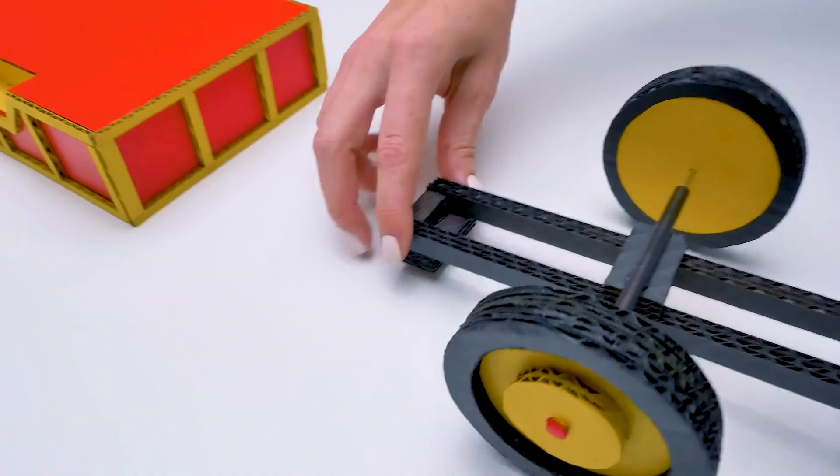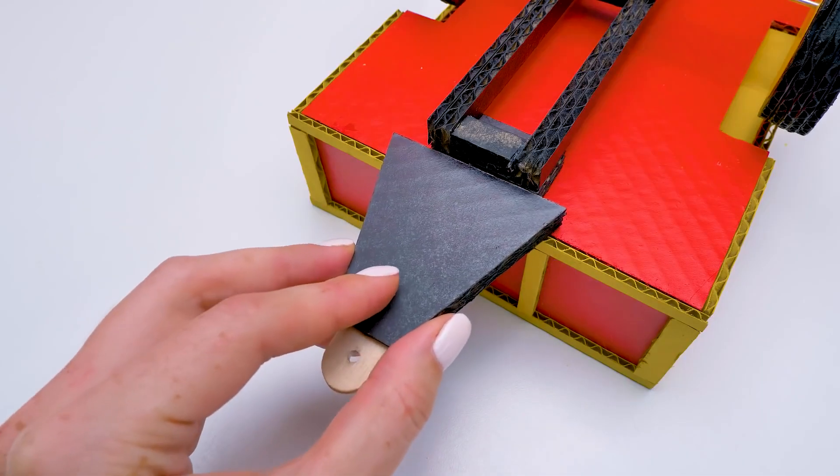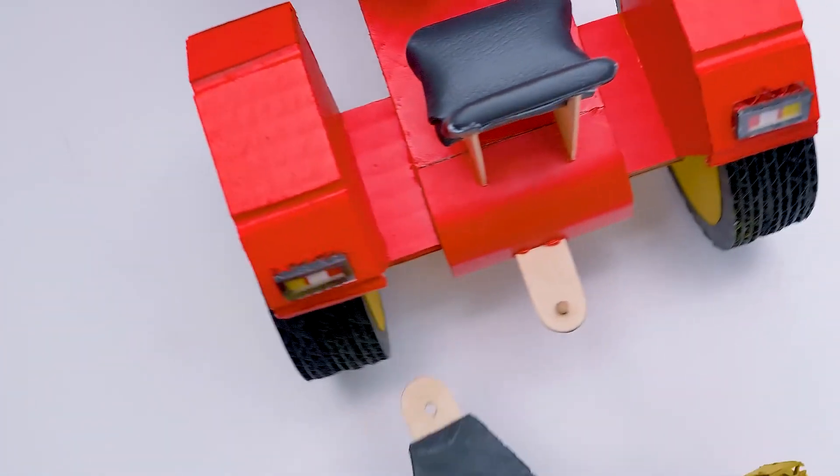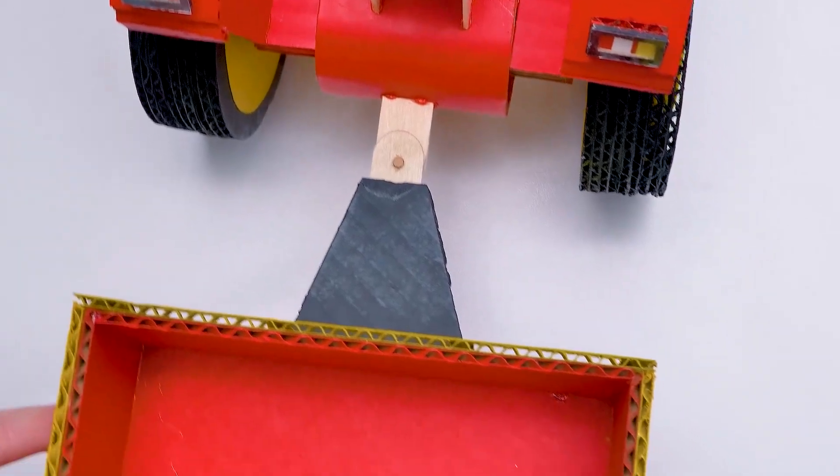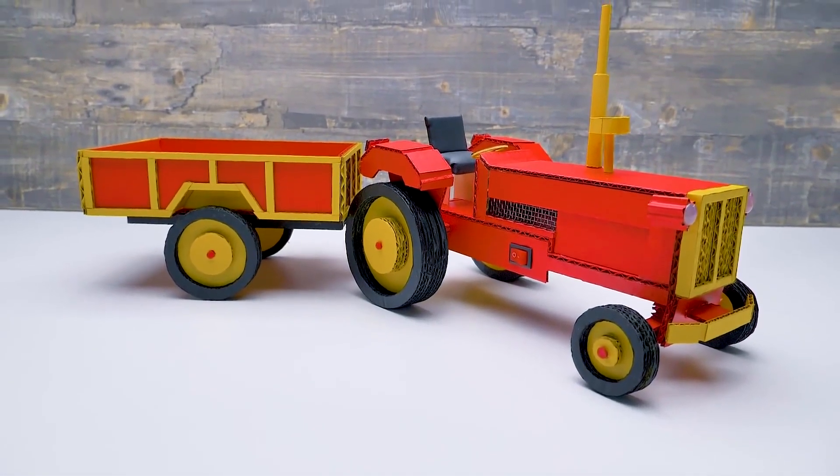Now we'll assemble everything like this. The axis with wheels goes onto its place there. And this part is made to connect the trailer to our tractor. And done! Now comes the big moment! Voila! Our tractor with the trailer is ready for action!